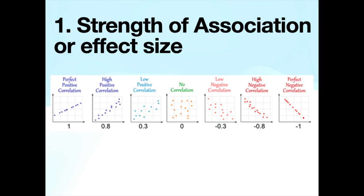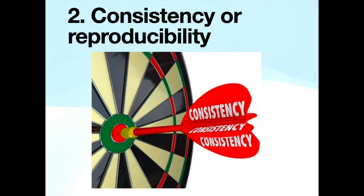A higher strength of association or effect size between exposure and outcome suggests a higher likelihood of a causal relationship. Consistency or reproducibility observed in different studies, populations and circumstances.